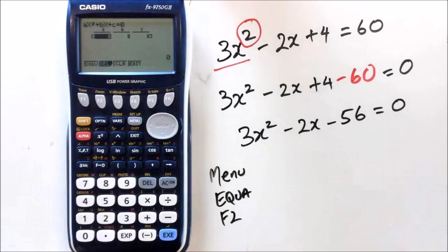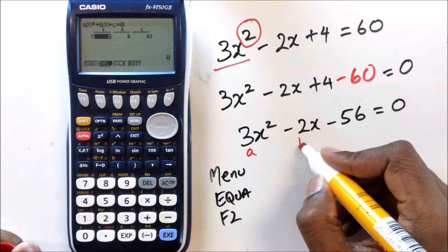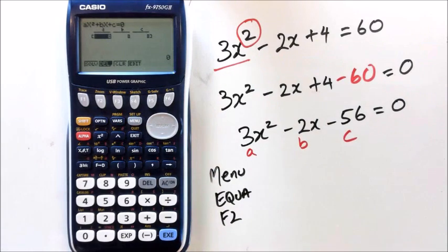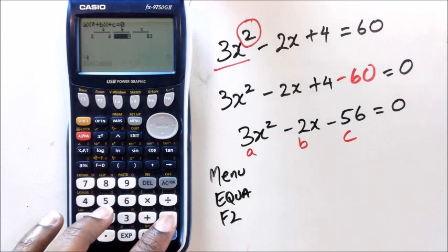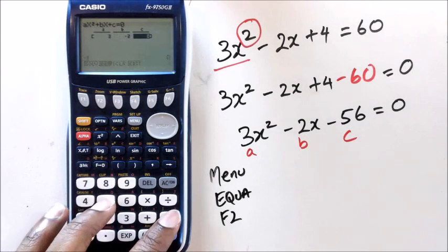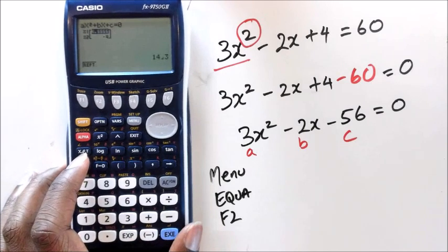Now, it's asking me for the values for a, b, and c. Now, the values for a, b, and c are here. So when you press a as, you've got a as 3, b as minus 2, and c as minus 56. So you press enter, and press enter again.